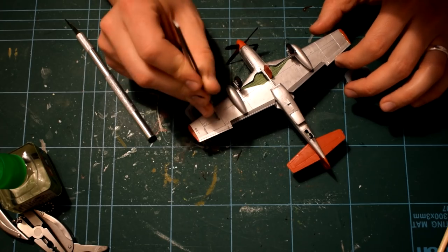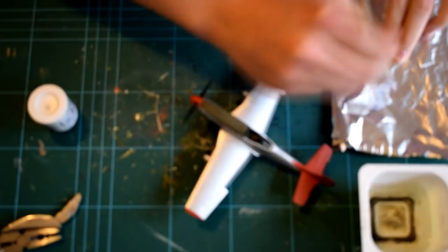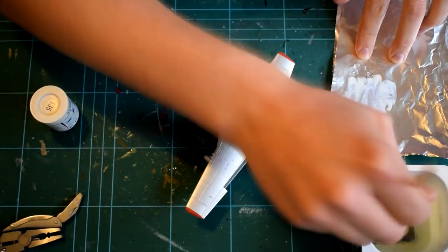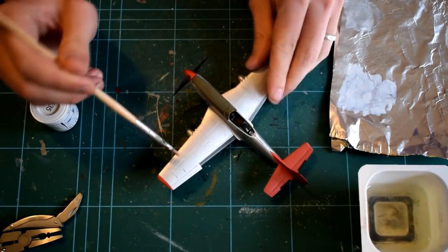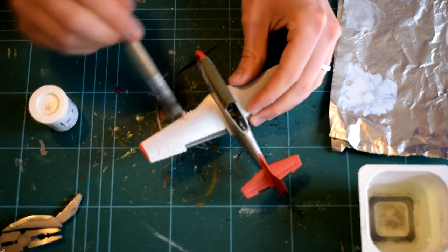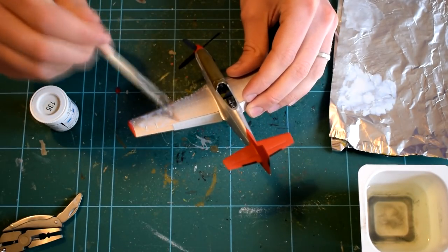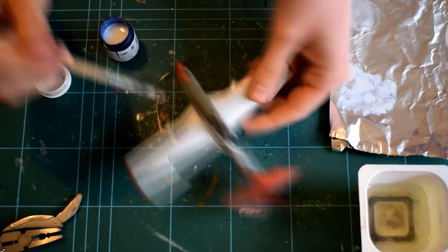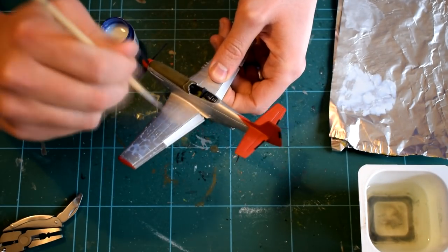With the landing gear completed, I then painted Humbrol Satin Varnish number 135 over the entire model. This acrylic paint was thinned with water, in order to avoid leaving brush strokes and to help give a good surface for the decals to stick to, and to prevent any silvering that could occur.